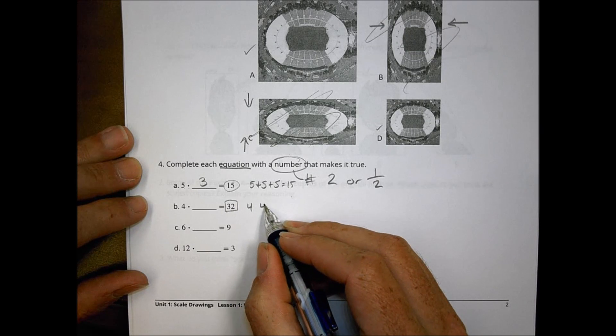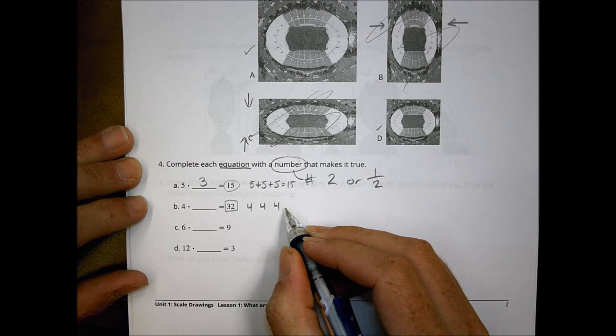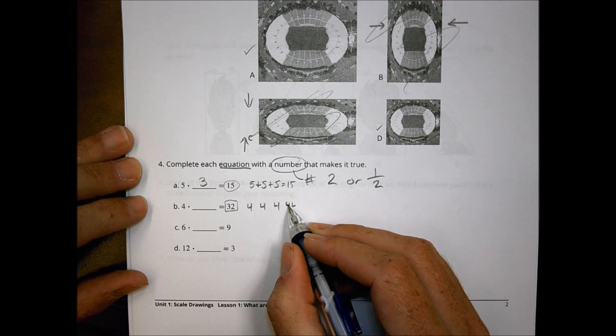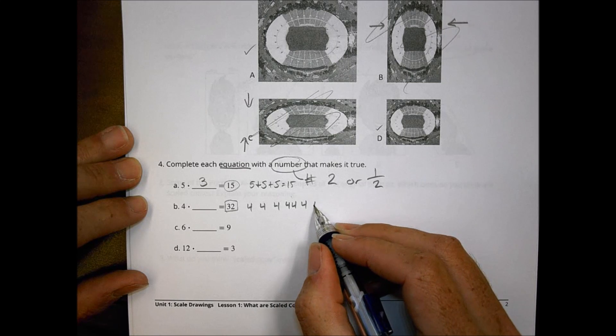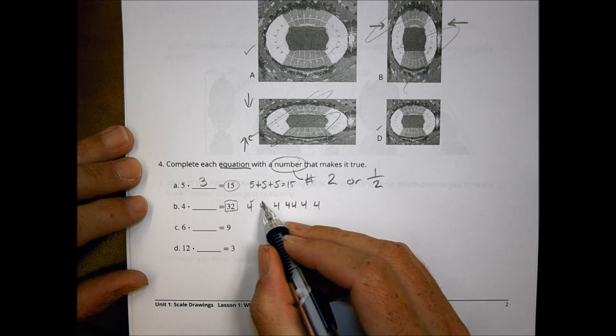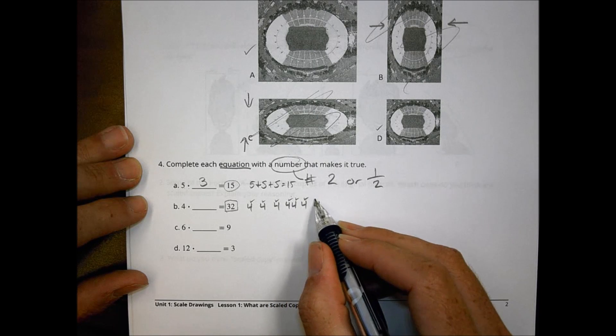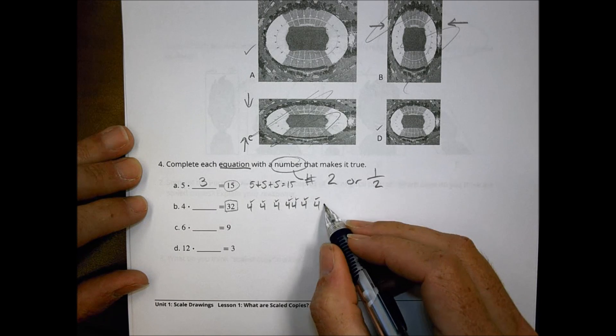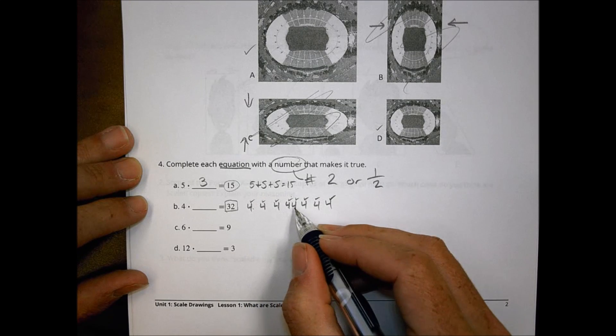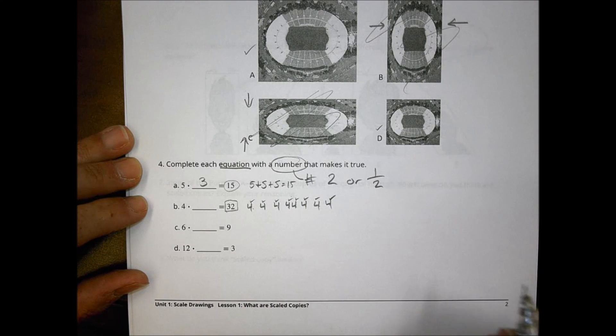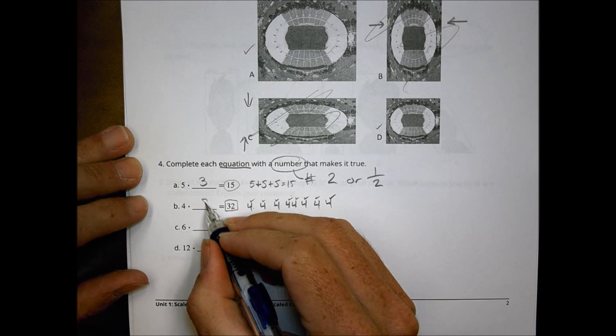Over here four times what number gets me up to 32. How many fours? We have 4, 8, 12, 16, 20, 24, 28, 32. So we have an eight right there.